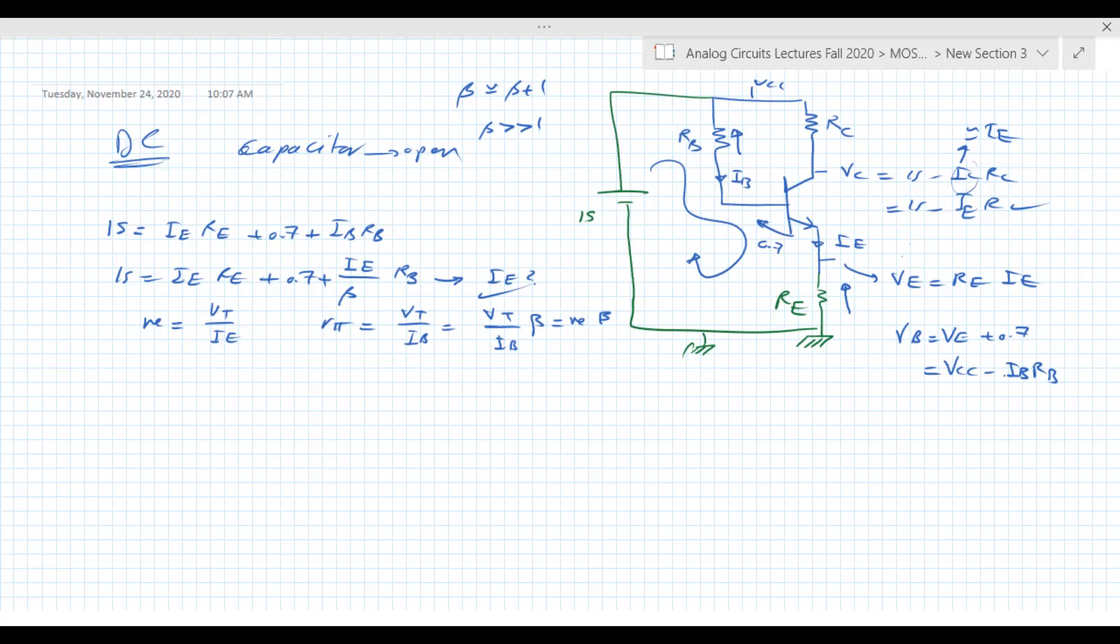Yeah, putting the VCC in that way is always helpful. Quick question: where does that IE over beta come from again? So, IE is equal to IC plus IB, and IC is beta*IB, right? So beta plus one times IB. And if beta is much larger than one, you can assume that beta plus one is approximately equal to beta. I usually neglect the one.